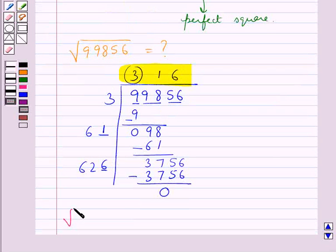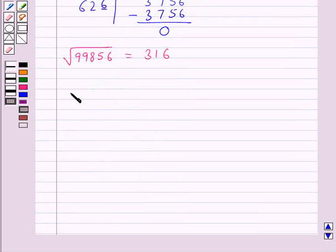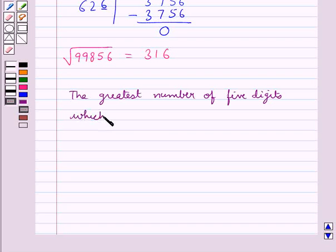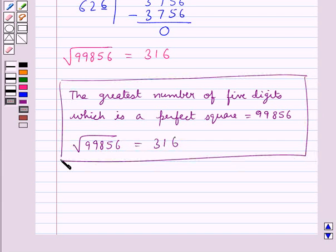Hence we have square root of 99856 is equal to 316. Hence our final answer is the greatest number of 5 digits which is a perfect square is 99856, and square root of 99856 is 316. So this completes the session. Hope you have understood the solution for this question.